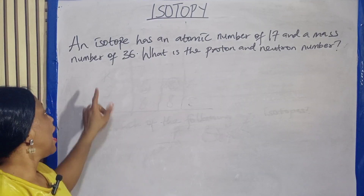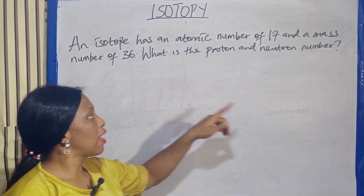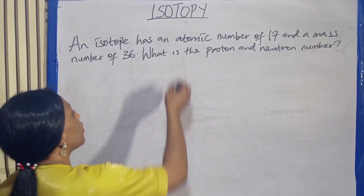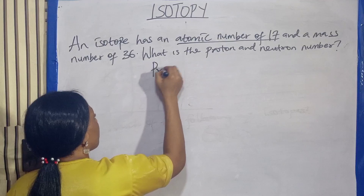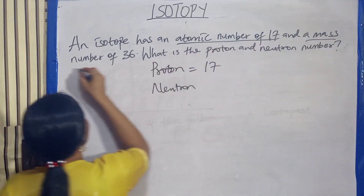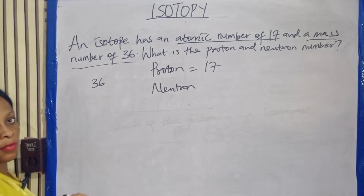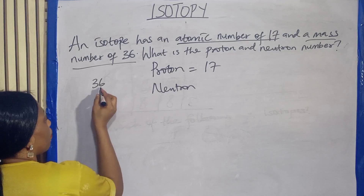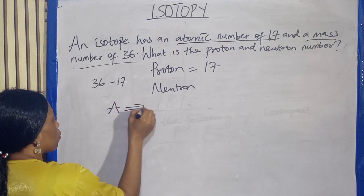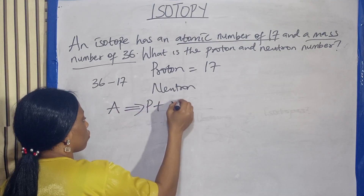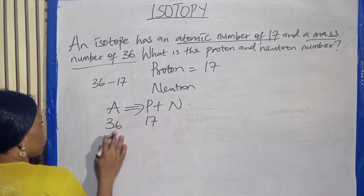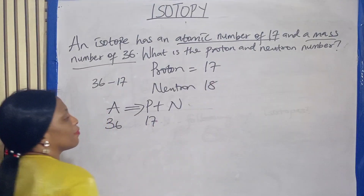Let's look at this question. An isotope has an atomic number of 17 and a mass number of 36. What is the proton and neutron number? The atomic number is the same as the proton number, so the proton is 17. For the neutron: atomic mass equals proton plus neutron, so if the mass number is 36 and the proton is 17, we subtract 17 from 36 — that gives us the neutron number. Isn't that simple?